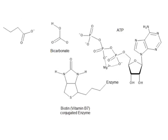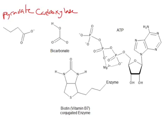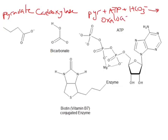We're going to talk about one of the key enzymes of gluconeogenesis: pyruvate carboxylase. It adds a carboxy group — a COO — onto pyruvate to make oxaloacetate. The balanced equation is: pyruvate + ATP + HCO3⁻ (bicarbonate, a normal product of CO2 in your blood or cytoplasm) → oxaloacetate, which is part of the Krebs cycle, + ADP.